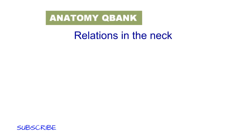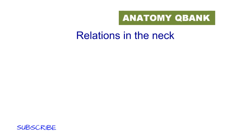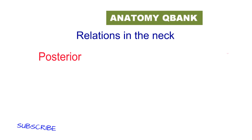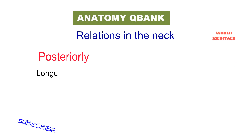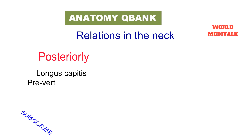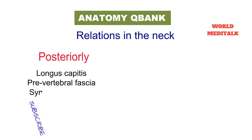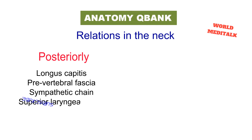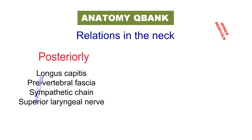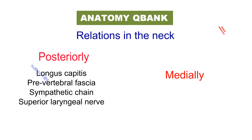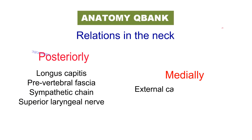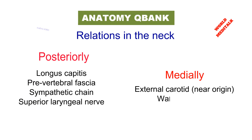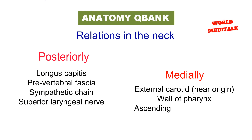Relations in the neck: Posteriorly — longus capitis, prevertebral fascia, sympathetic chain, and superior laryngeal nerve. Medially — external carotid near its origin, wall of pharynx, and ascending pharyngeal artery.